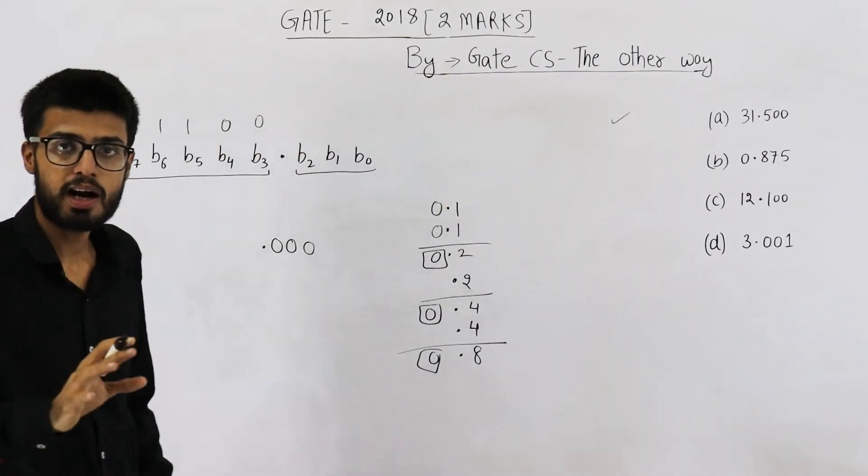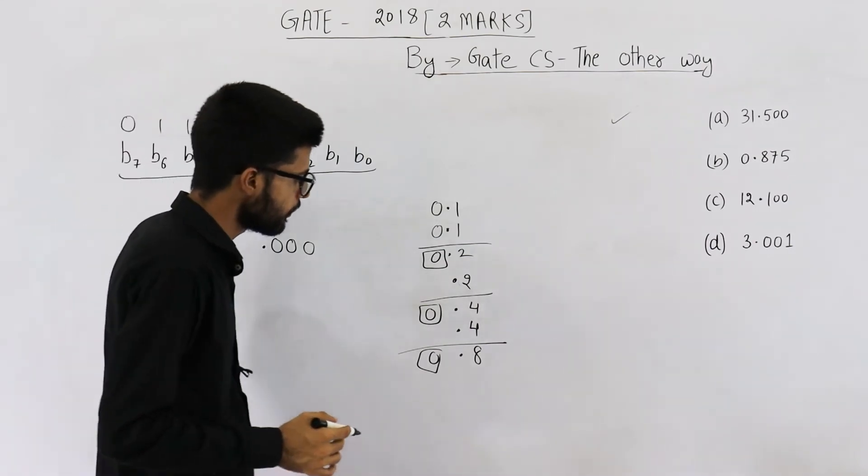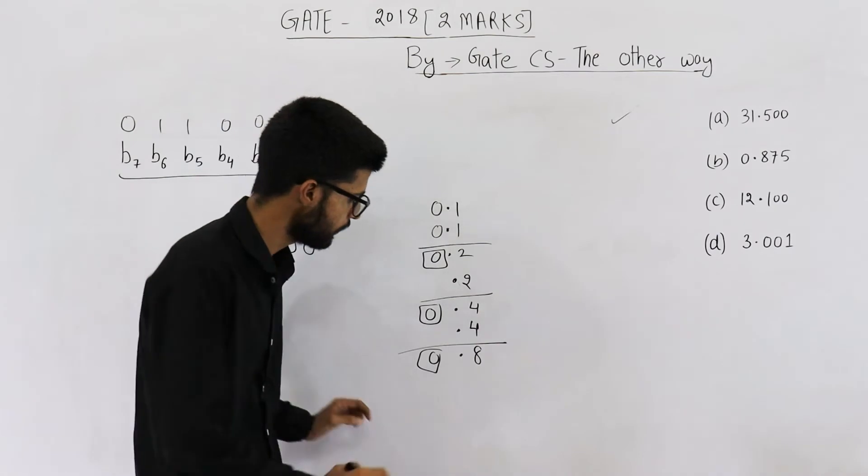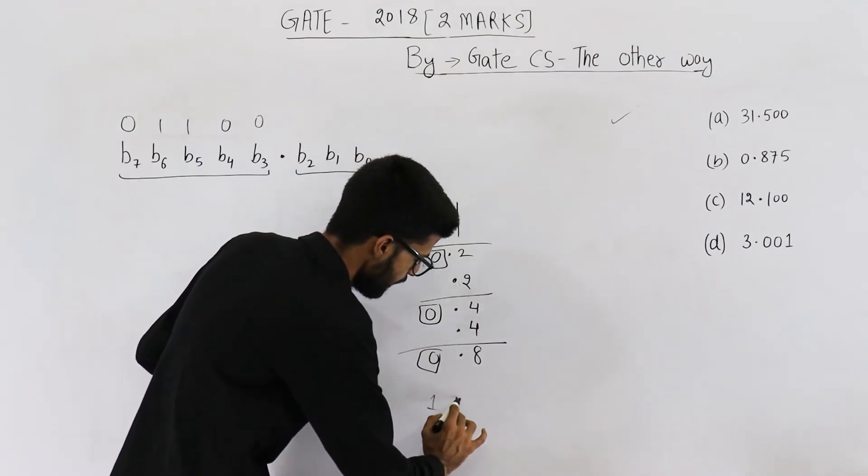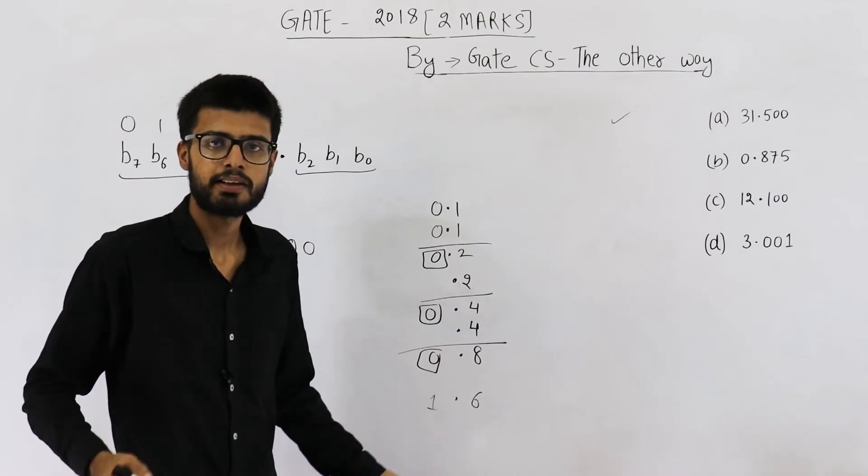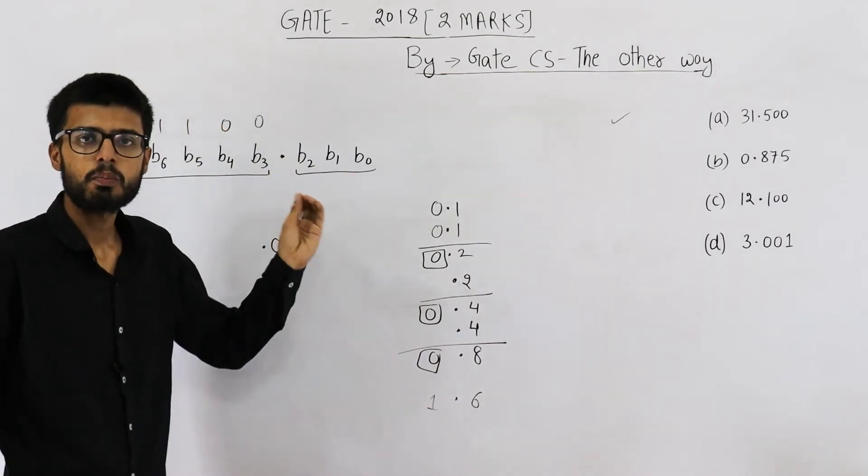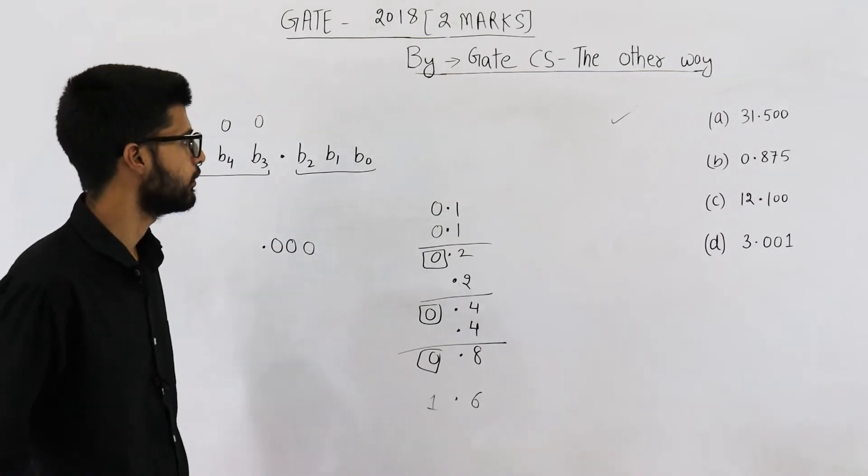So still we can't save the exact value 0.1. See, if you add 0.8 to 0.8, you'll get a 1 here. And here it will be 0.6. Still you'll add 0.6. That means a lot of bits will be required. Even in 4 bits, 0.1 cannot be exactly represented.